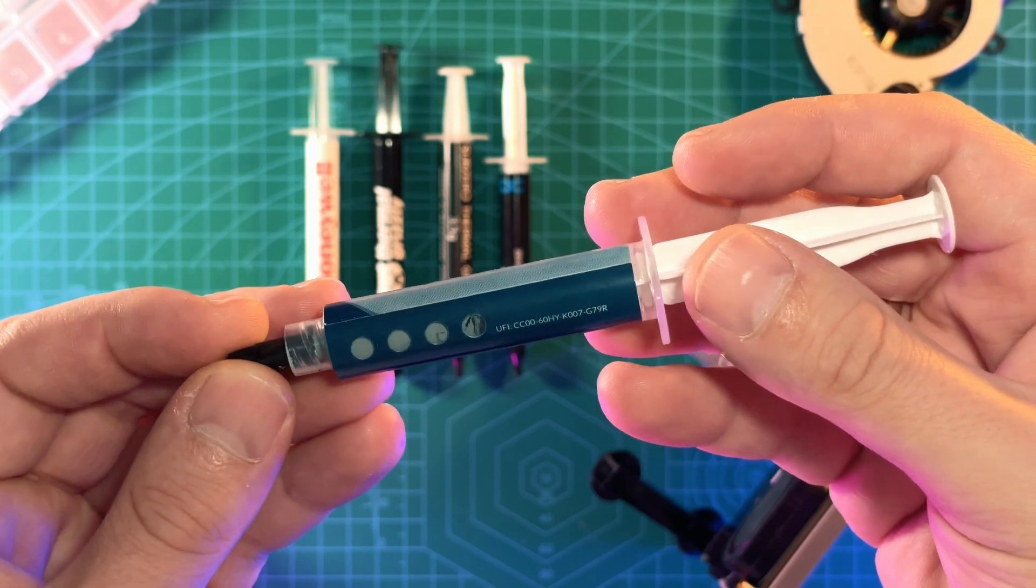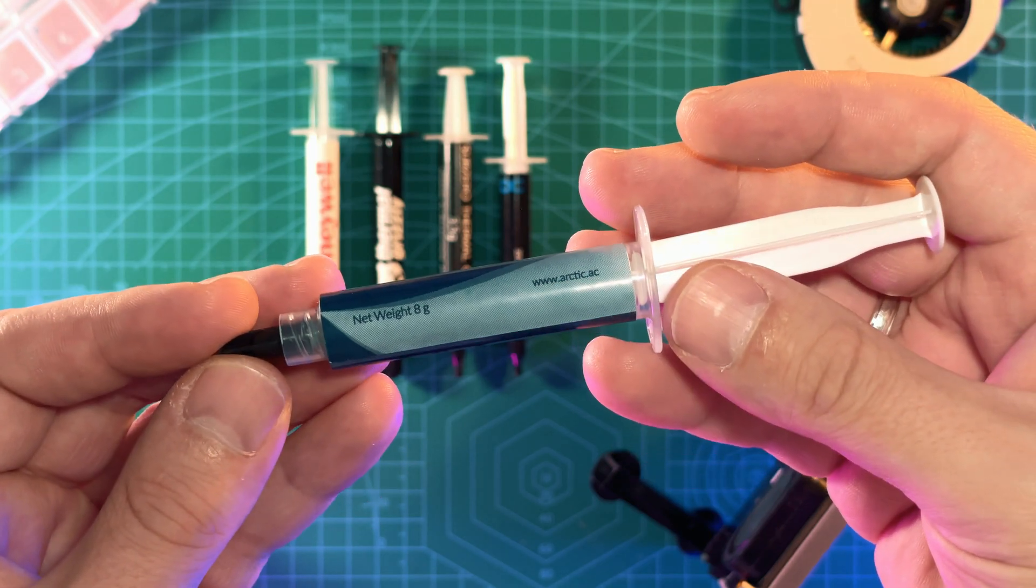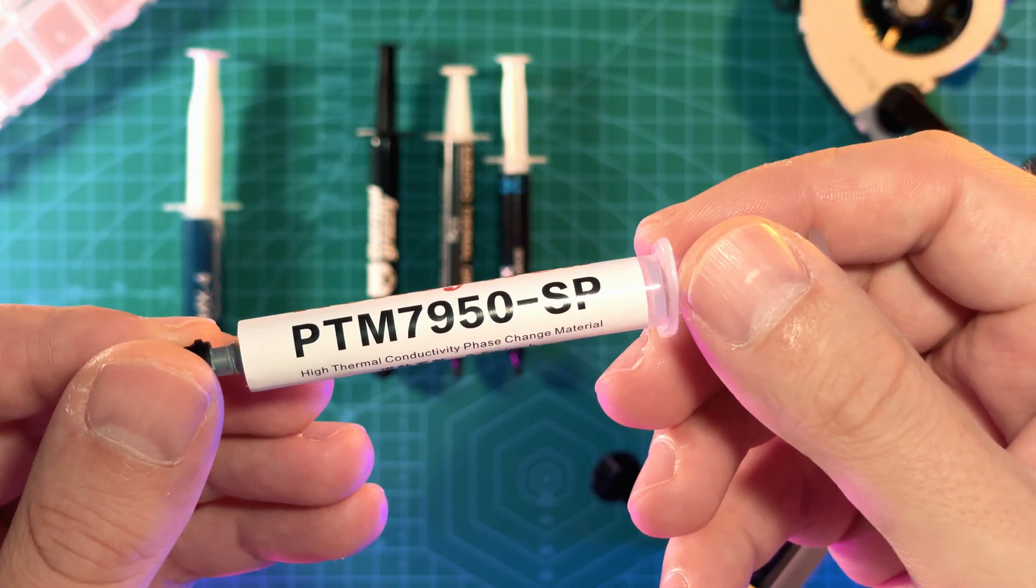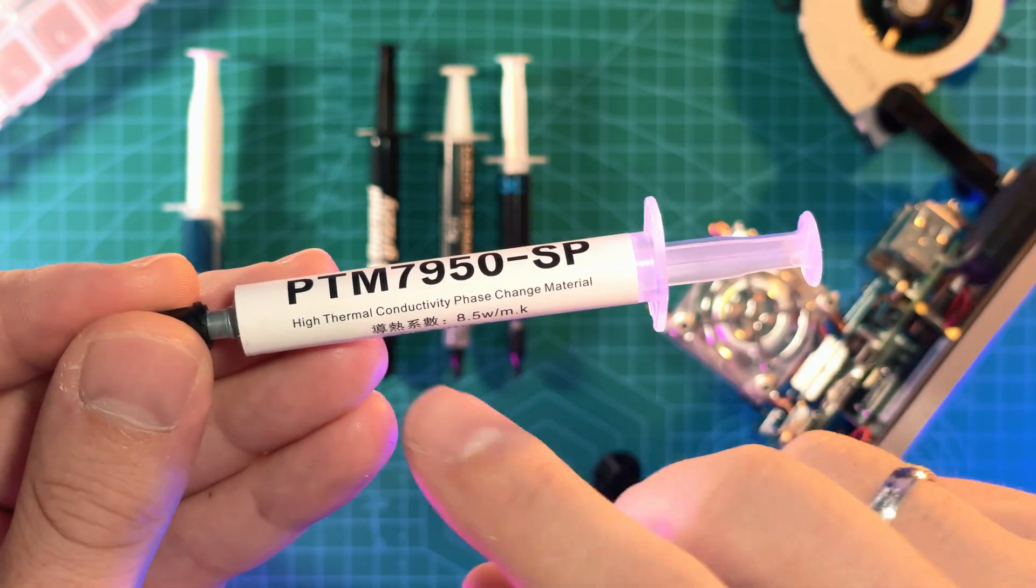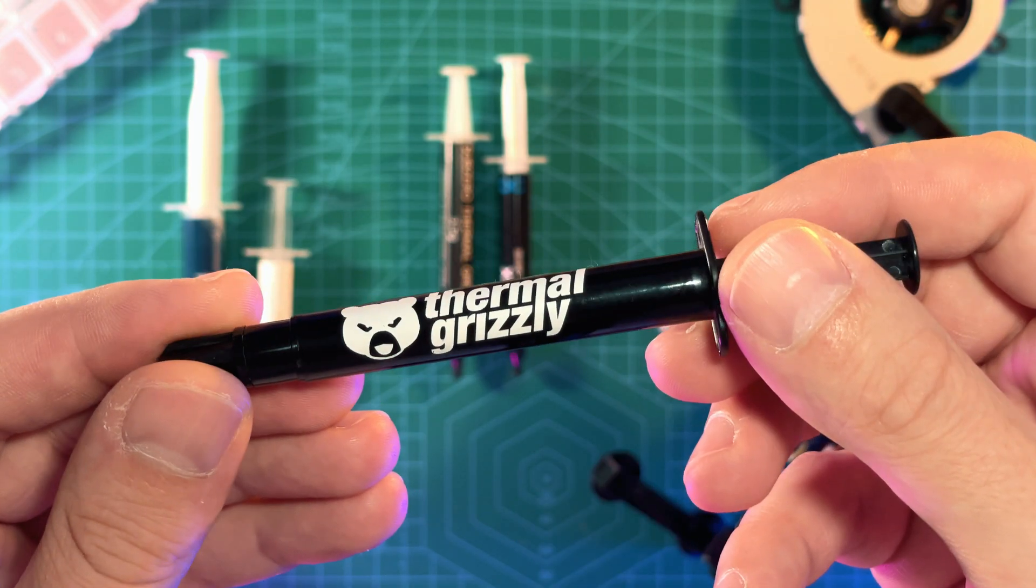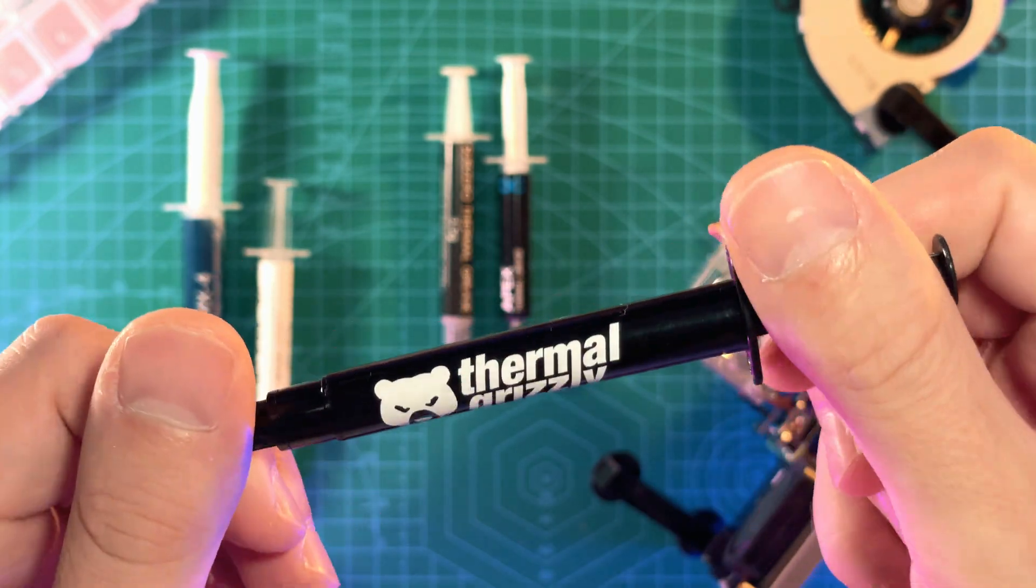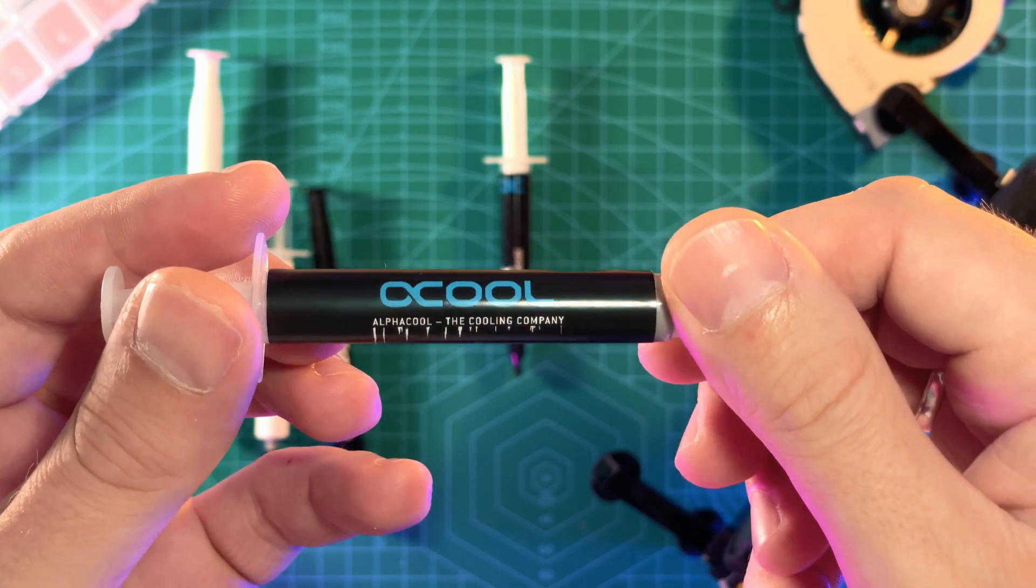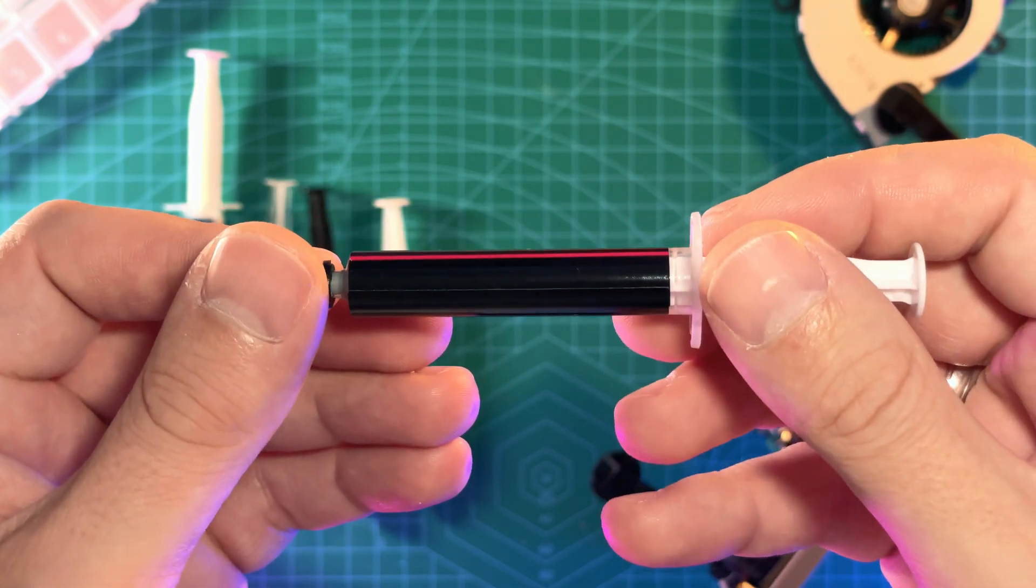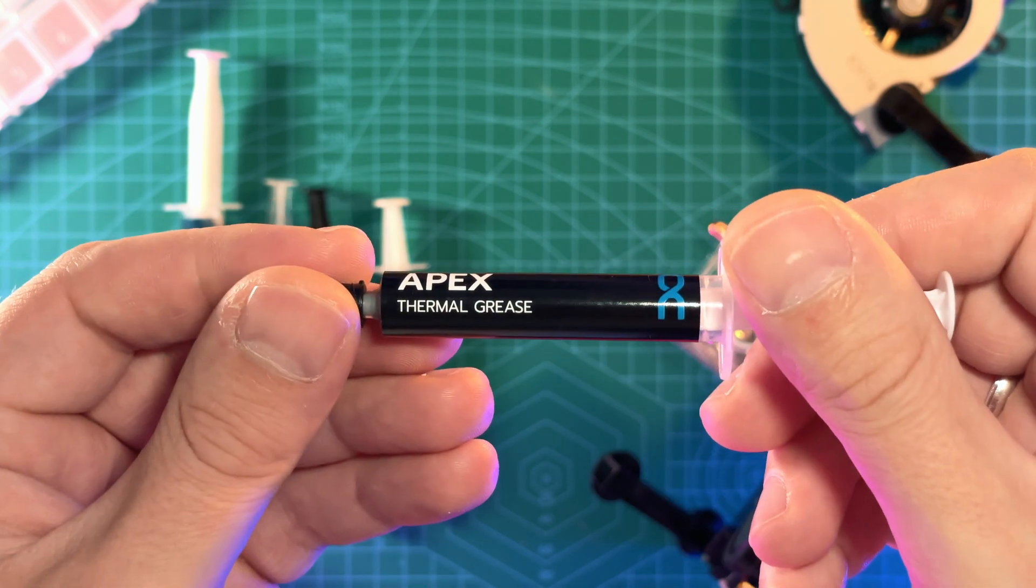First one is good old MX4 without thermal conductivity value unfortunately. Then we have Honeywell PTM7950SP at 8.5W thermal conductivity. Thermal Grizzly Cryonaut have no thermal conductivity value unfortunately. Then we have Alphacool Subzero at 16W of thermal conductivity. Finally, my favorite, Alphacool Apex at 70W of thermal conductivity.